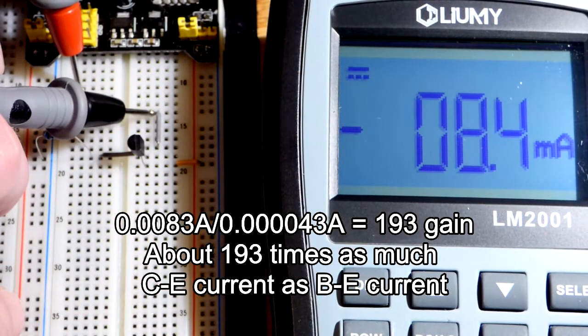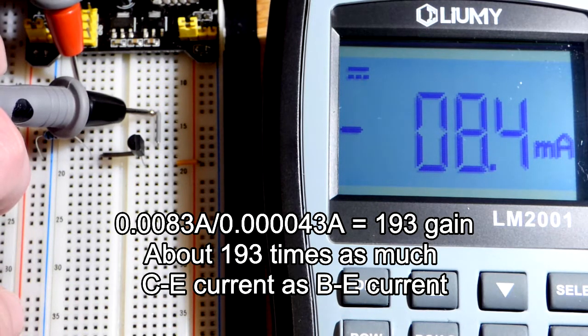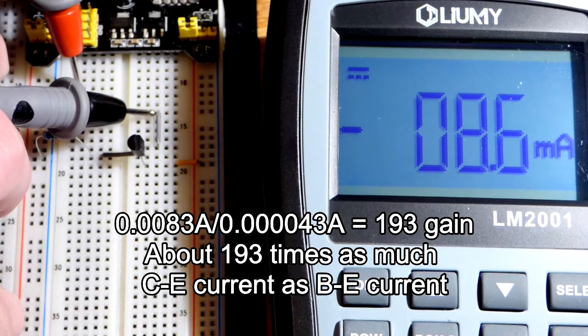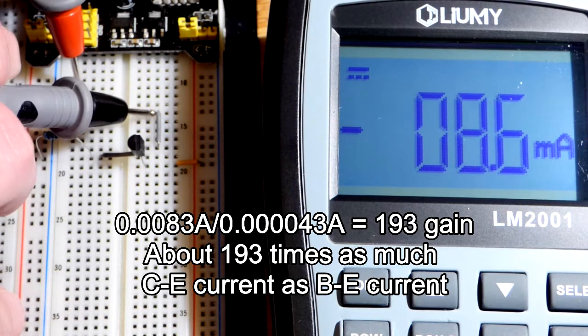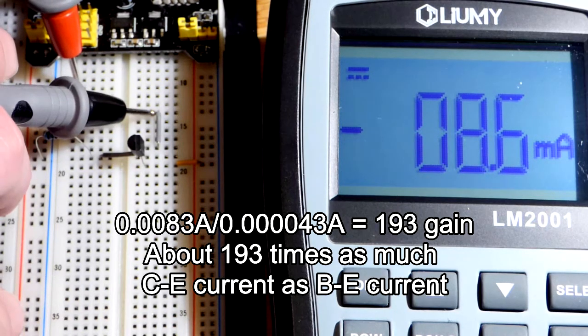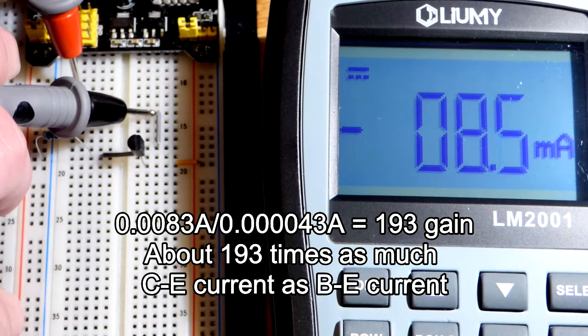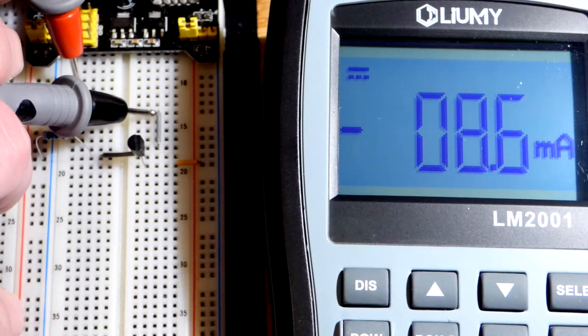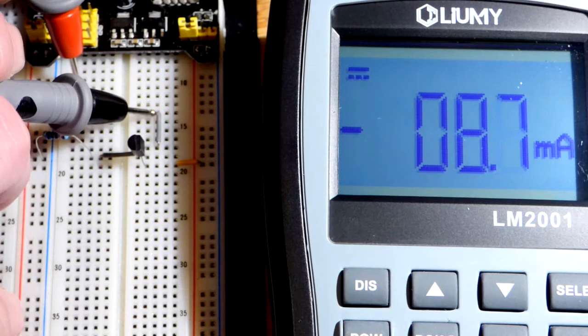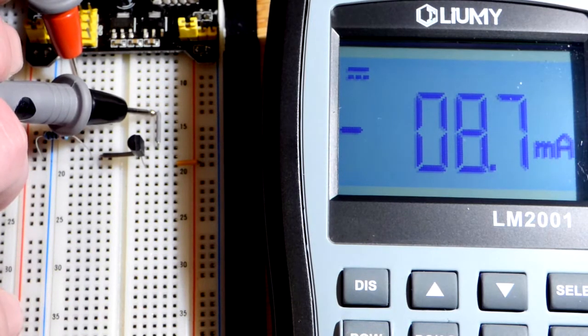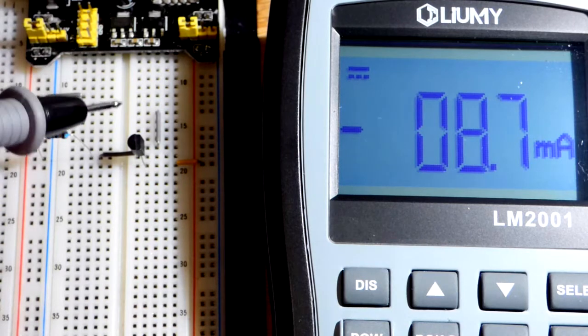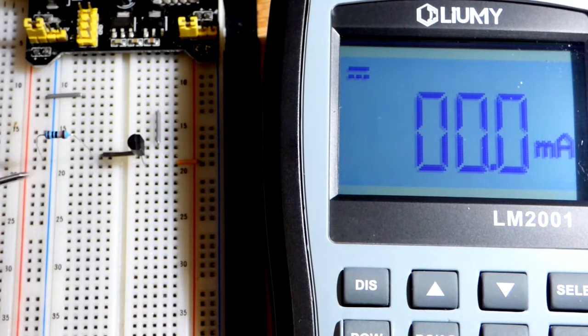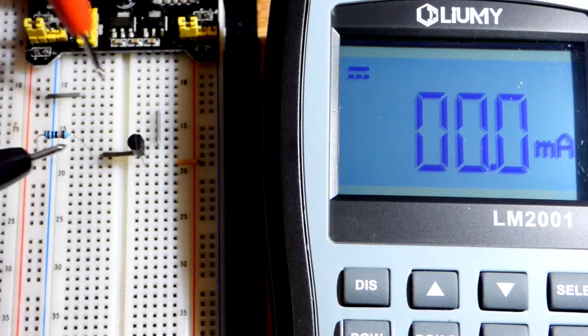Just quickly off the top of my head, maybe that is like 190 times as much current. Just a quick mental math, I'm not very good at that. I may be off. I'll try to make sure to write the actual multiple down at the bottom of the screen. But as you can see, it's in the hundreds of times, the lower hundreds, of current going through the collector-to-emitter than we are putting through the base-to-emitter.